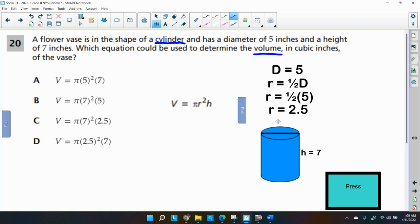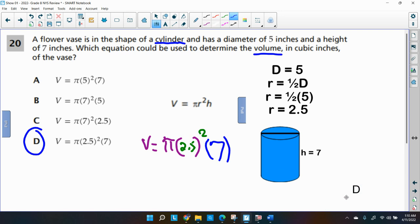They asked us to pick the equation to find the volume of this. So I need the volume equals, I need pi. I need r. r was 2.5. Don't forget to square it. And the height is seven. So my volume is equal to pi 2.5 squared times seven. And that looks like choice letter D. So I'm going to go with D. And hopefully you did too. So that's pretty much it for me today, ladies and gentlemen.